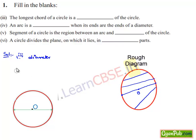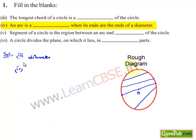Moving on to the fourth bit: an arc is when its ends are the ends of the diameter. Considering the figure, let us name the points at the ends of the chord passing through the center as A and B. It divides the circle into two equal parts. Therefore, the arc formed by the chord passing through the center is nothing but a semicircle.